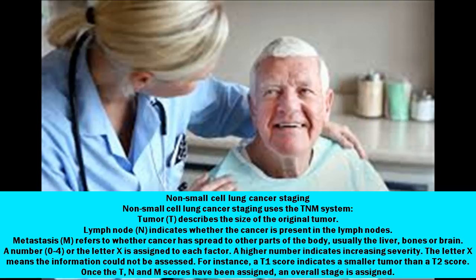A number 0 through 4, or the letter X, is assigned to each factor. A higher number indicates increasing severity. The letter X means the information could not be assessed. For instance, a T1 score indicates a smaller tumor than a T2 score.